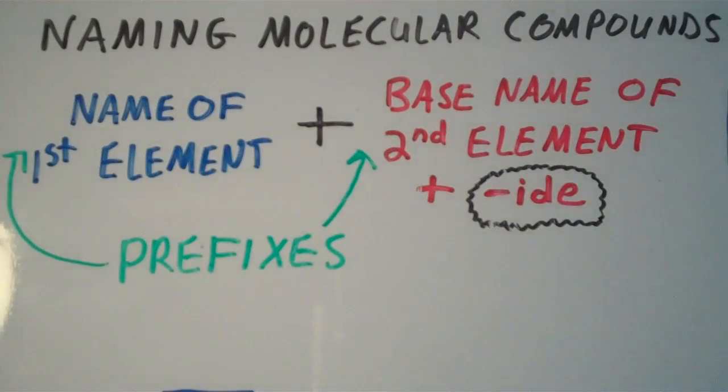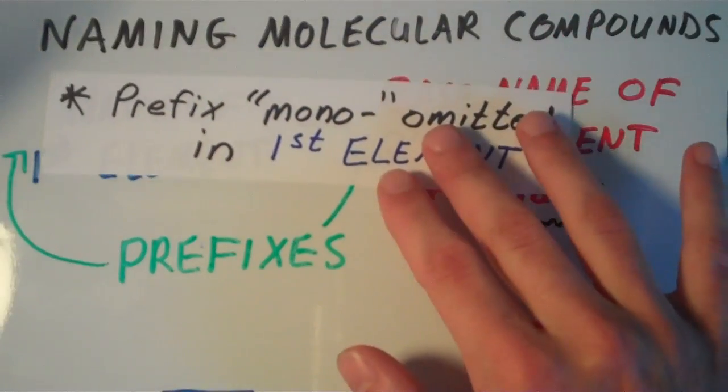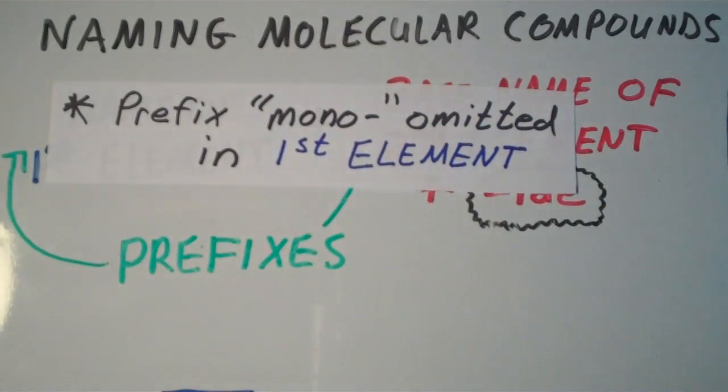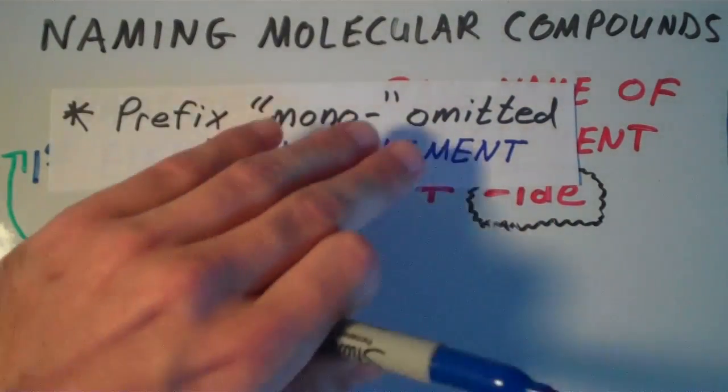One more tip when we work with molecular compounds is that the prefix mono is usually omitted in the first element when we have one atom of that element.